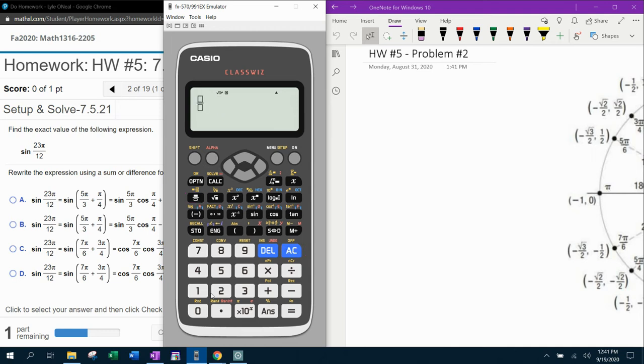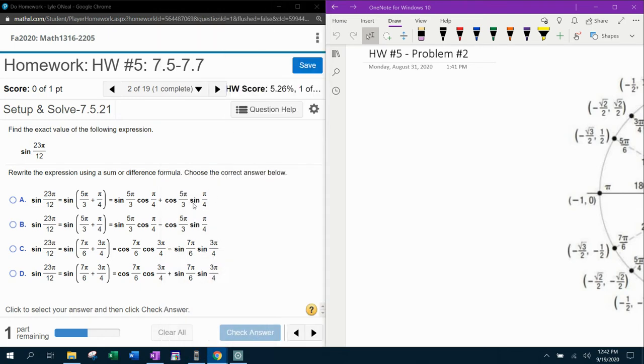And then if we check answer choice C and D, we want to check 7π over 6 added to 3π over 4. And see if that is also 23π over 12, which it is. So that doesn't help me exclude any answer choices.